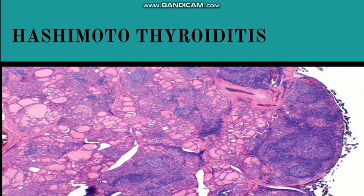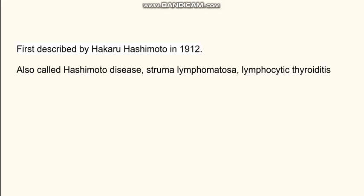In this video we will discuss Hashimoto's Thyroiditis. Thyroiditis means inflammation of the thyroid gland and it is of various varieties — it can be infectious, it can be due to autoimmune reasons, and it can be due to granulomatous thyroiditis. Here we are discussing autoimmune thyroiditis, that is the Hashimoto's one. This was firstly described by Hikaru Hashimoto and is also known as Hashimoto's disease, lymphocytic thyroiditis, and struma lymphomatosa.